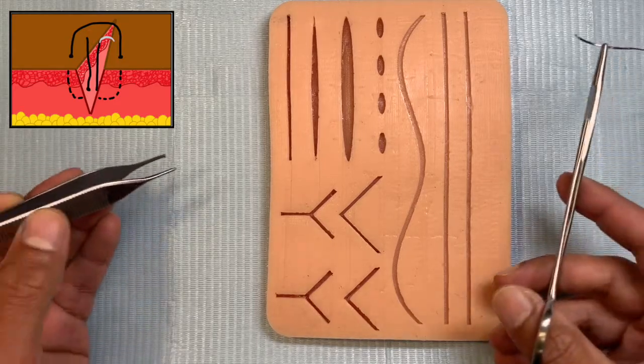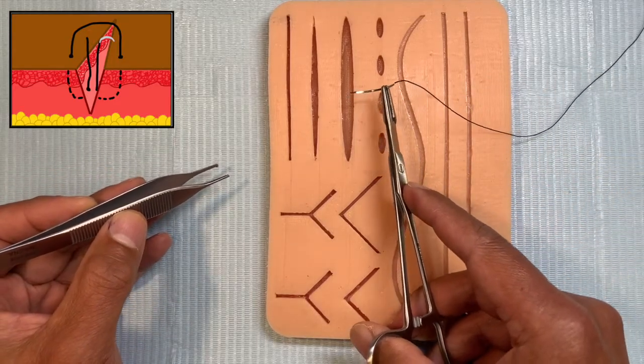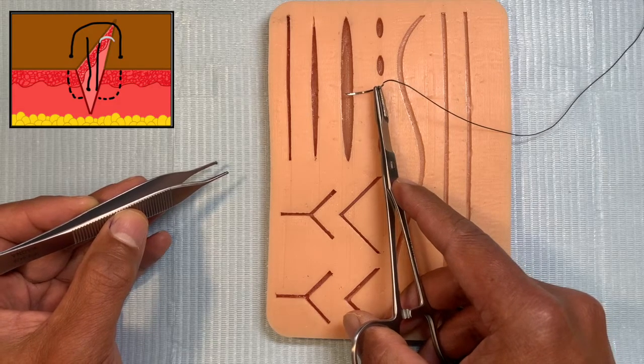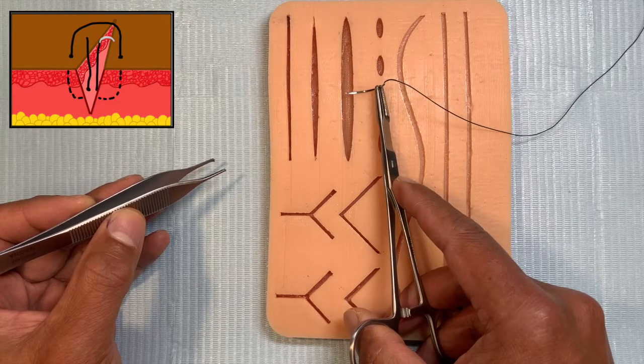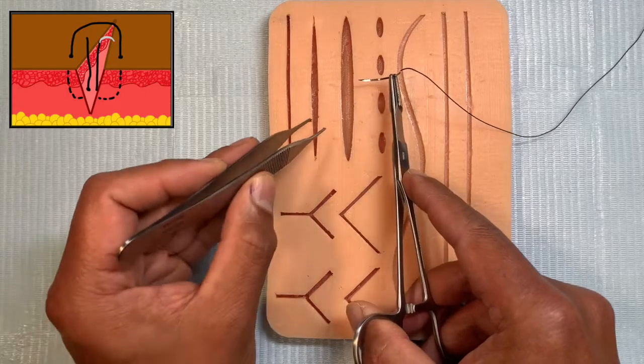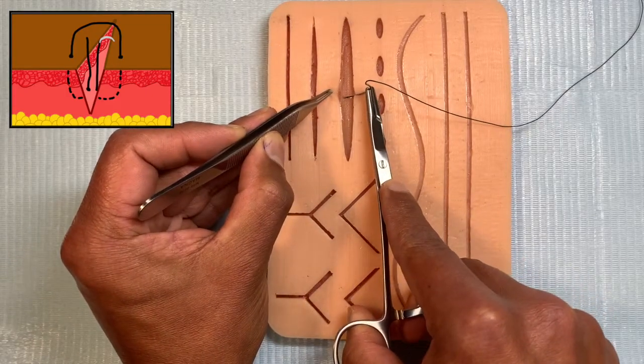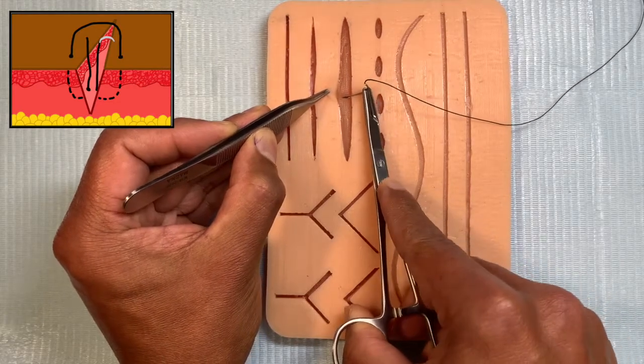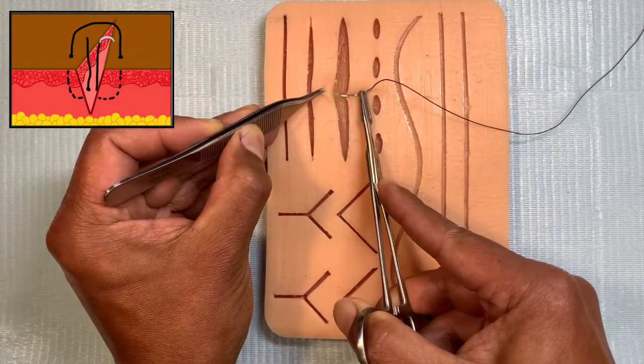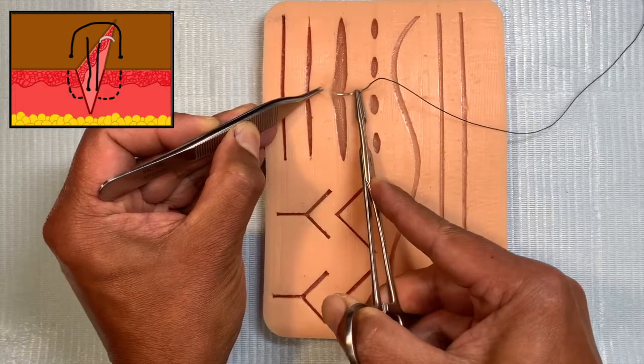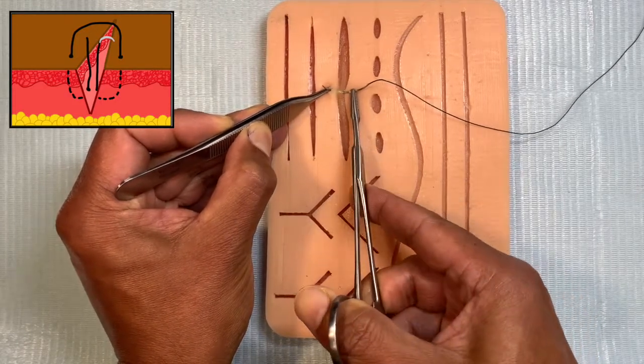So the way we want to talk about this is that the deep dermal suture is D to S and S to D. What does this mean? What we're going to do is go from deep to superficial. So you can see I'm taking my bite, I've held the needle right in the middle and I'm taking my bite from the depth to the surface.